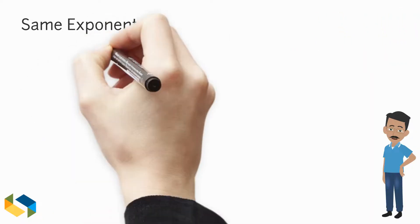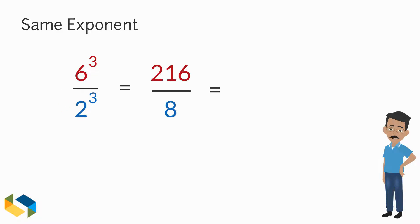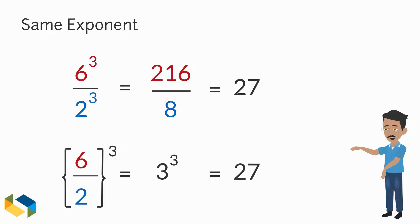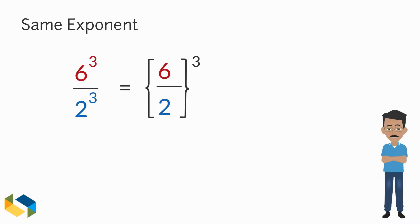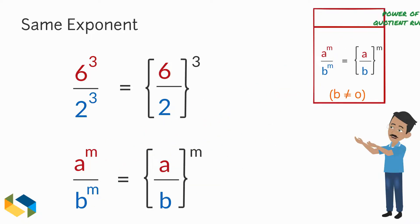Similarly, 6 raised to the power 3, or 6 cubed, divided by 2 cubed equals 216 divided by 8 — the answer is 27. But had you just divided the bases first and then applied the exponent, you would have 3 raised to the power 3, or 27 — the same result. So A raised to the power M divided by B raised to the power M is the same as the quantity A divided by B, the whole raised to the power M. This is called the power of the quotient rule.